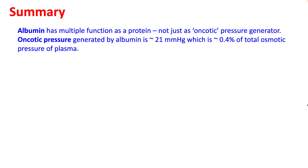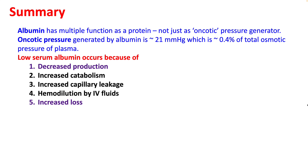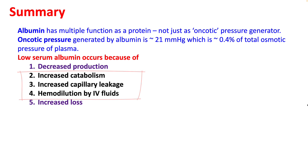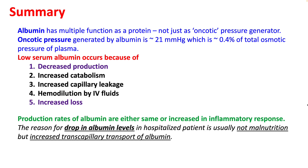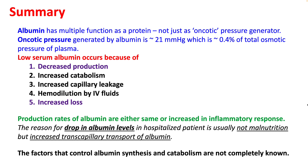In summary: albumin has multiple functions as a protein, not just as an oncotic pressure generator. Oncotic pressure generated by albumin is about 21 mmHg, which is only about 0.4% of total osmotic pressure of plasma. Low serum albumin occurs because of decreased production and increased loss in chronic conditions, and increased capillary leakage along with increased catabolism and hemodilution in acute illnesses. Production of albumin is either the same or increased in inflammatory responses. The reason for the drop in albumin levels in hospitalized patients is usually not malnutrition but increased transcapillary transport of albumin. The factors controlling albumin synthesis and catabolism are still not completely known.